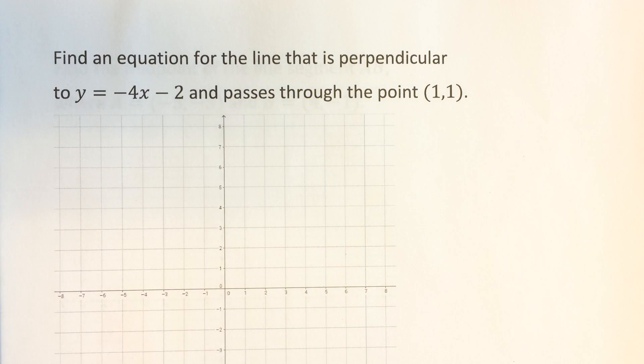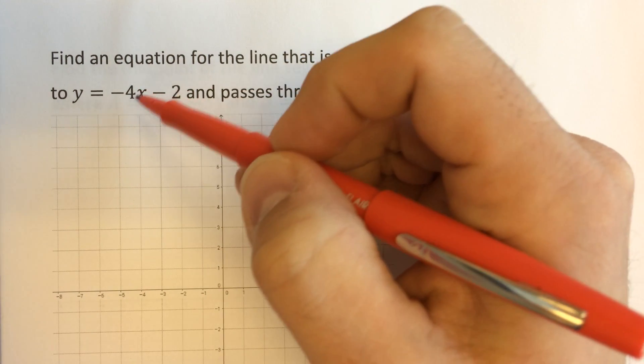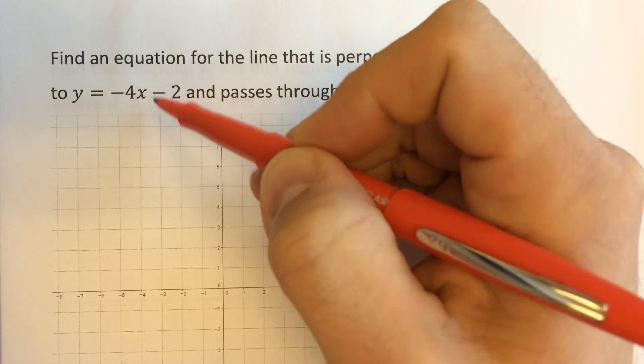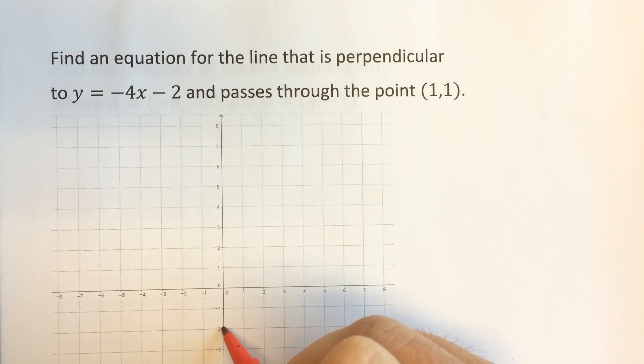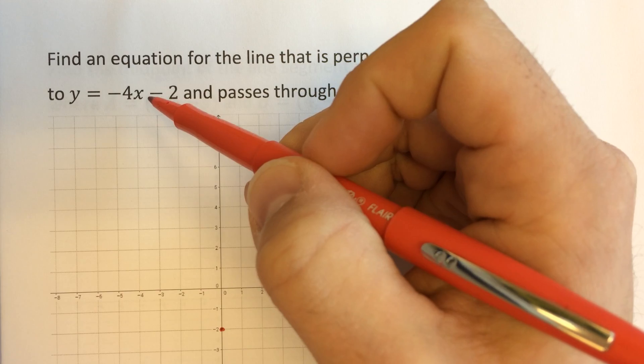So let's first plot the graph of this line right here. It has a y-intercept of negative 2 and it has a slope of negative 4.